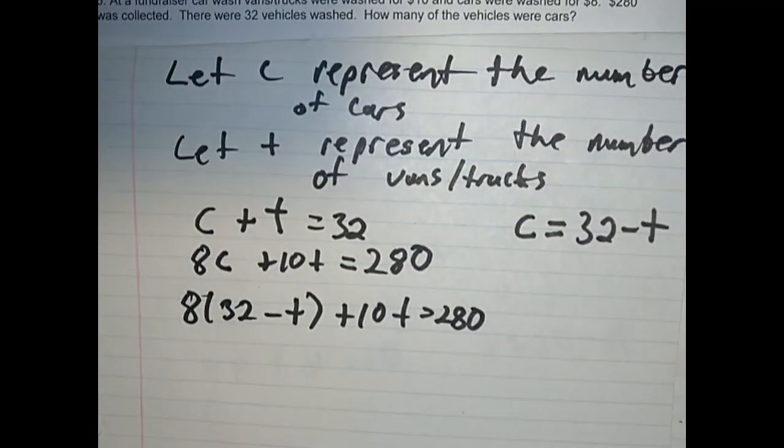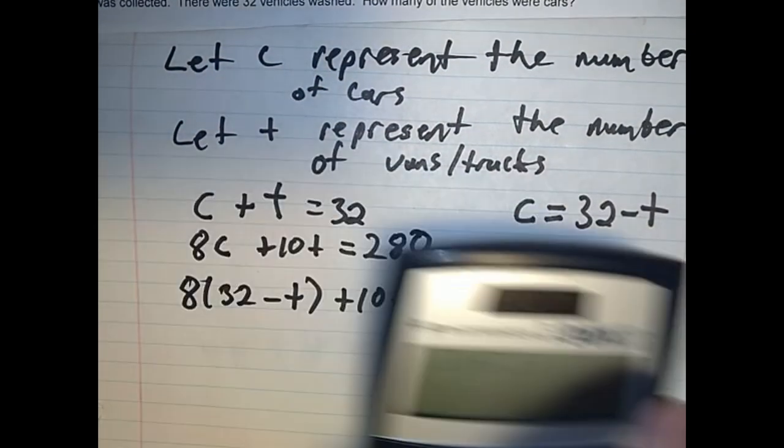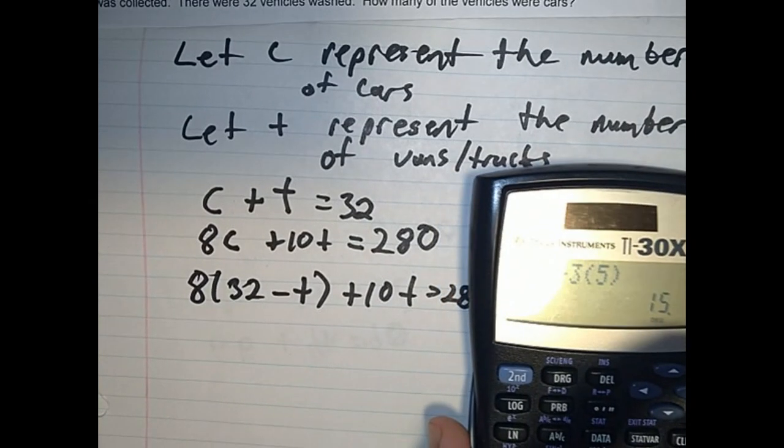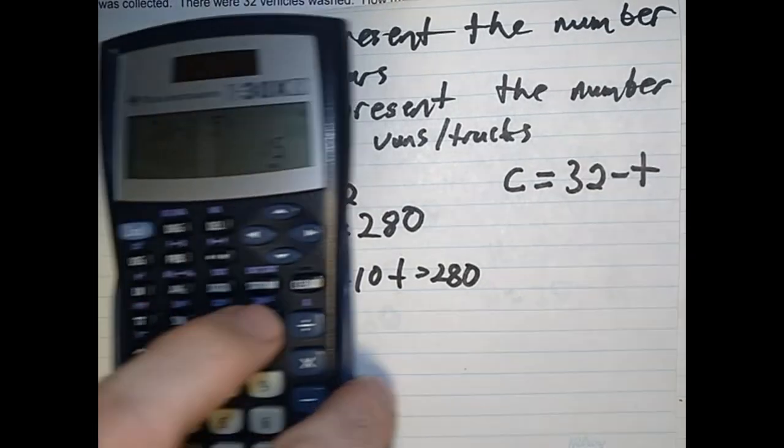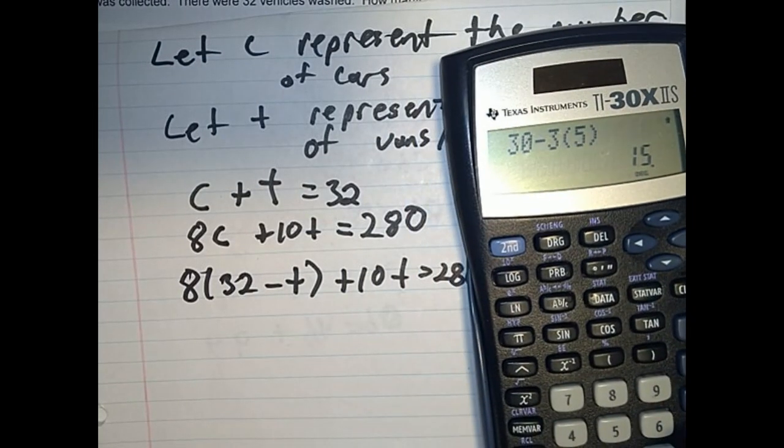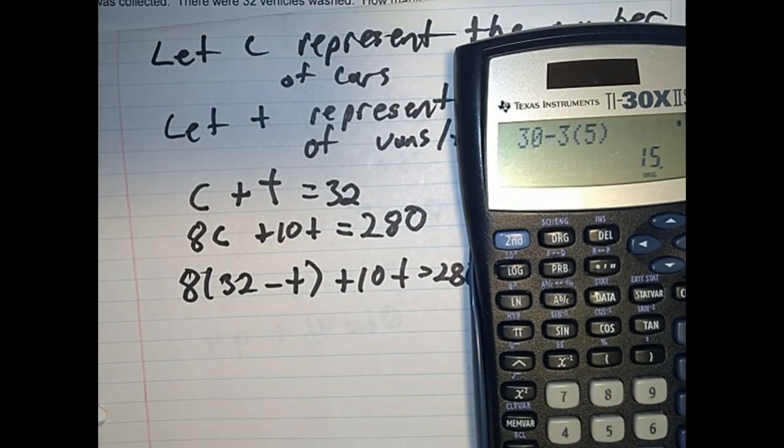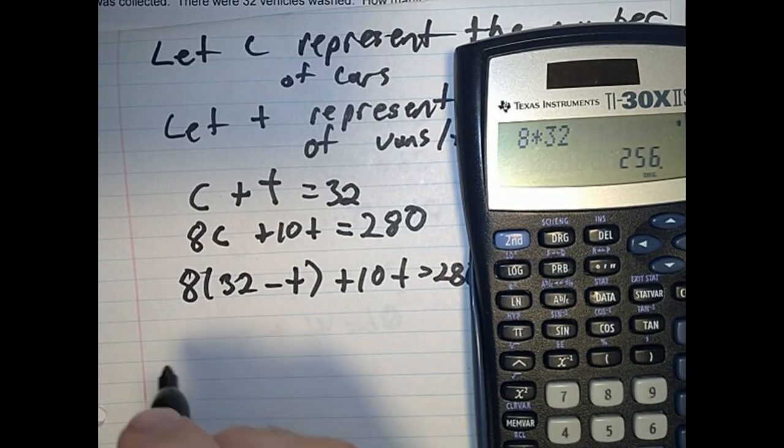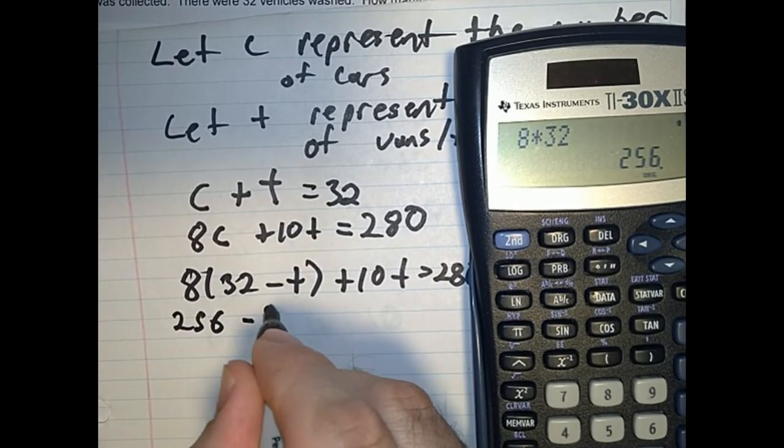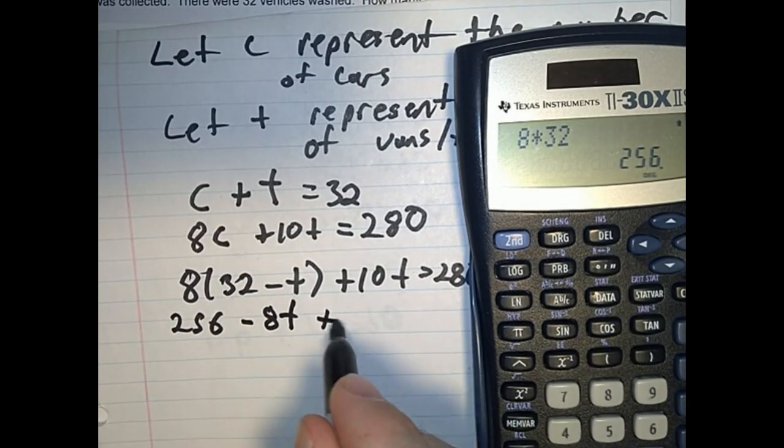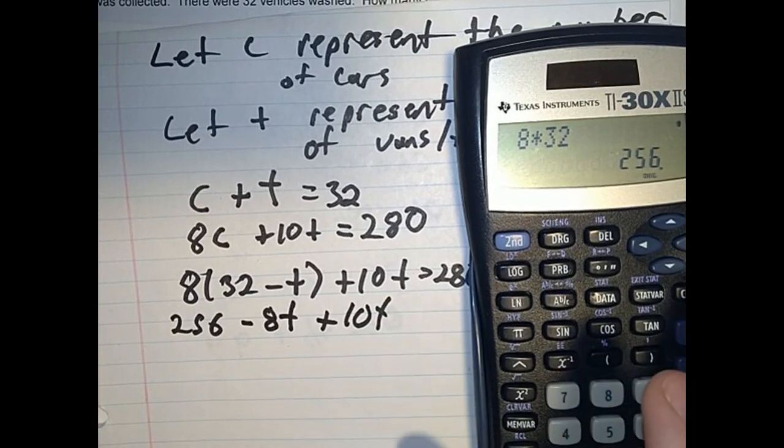Okay. I will now continue it. So let's put my calculator here. So it's 8 times 32. 256. Minus 8T plus 10T equals 280.